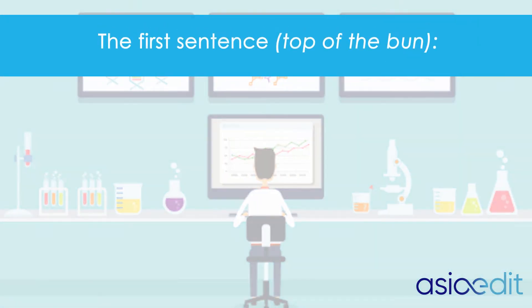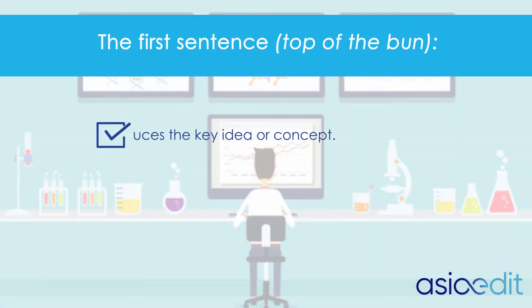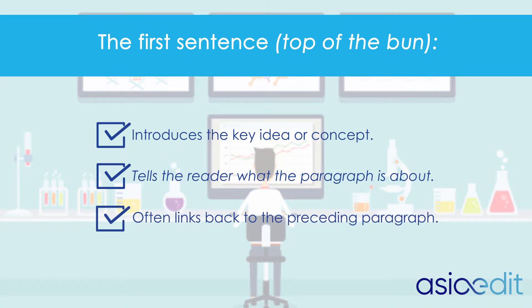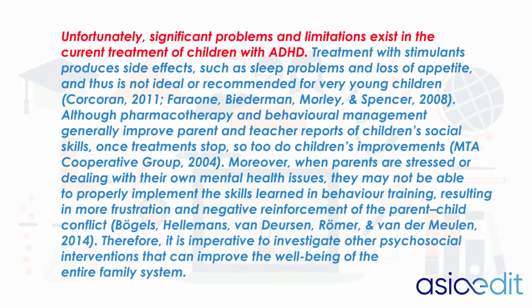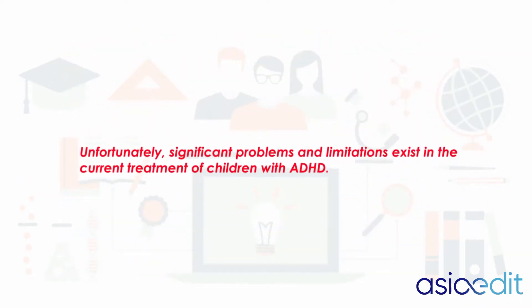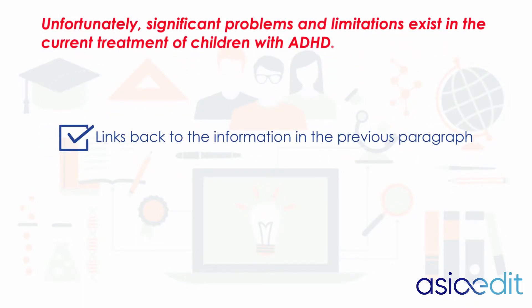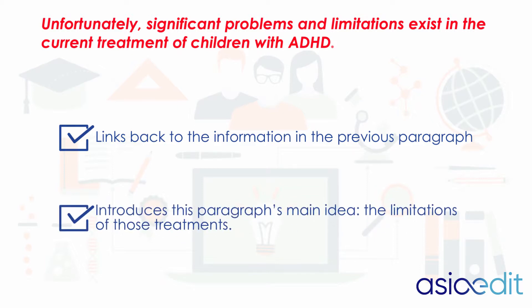The first sentence, or the top half of the bun, introduces the key idea or concept. This signals to the reader what the paragraph is about. The opening sentence often links back to the preceding paragraph. The first sentence in our example paragraph links back to the information in the previous one, which outlined treatments for attention deficit hyperactivity disorder, ADHD. This introduces the main idea to be discussed in this paragraph: the limitations of those treatments.